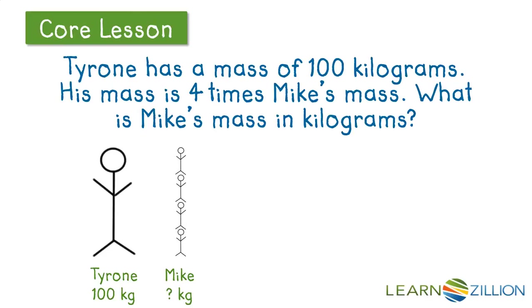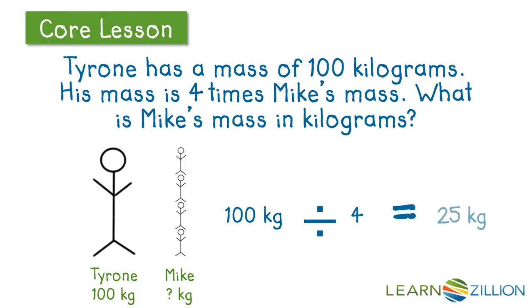So I'm trying to think of using a number pattern that I already know. Four what's equals 100? In my mind I'm thinking four quarters equals 100 cents, and each quarter is 25 cents. So four 25's equals 100. And so I'm going to use that connection to help me realize that 100 kilograms divided by four is going to give me 25 kilograms. So Mike's mass is 25 kilograms.